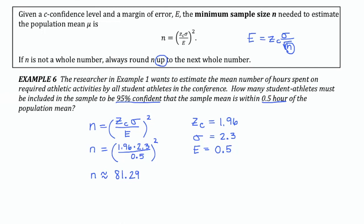You never want to round down — even though 81.29 would normally round lower — because if you go too low, you won't have enough data to achieve the confidence level you want. So please make sure you always round this minimum sample size up, meaning this researcher needs 82 students. If they survey 82 students, they can be 95% confident that the sample mean is within half an hour of the population mean. It's neat to see how people can take samples and generalize to make predictions about the entire population.